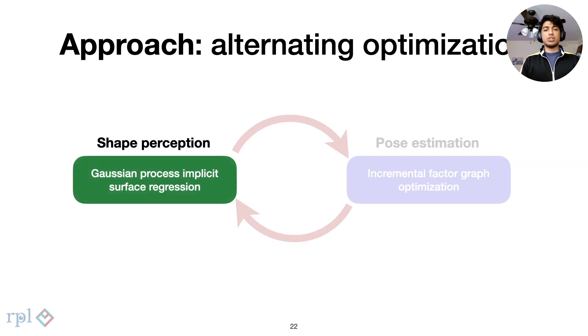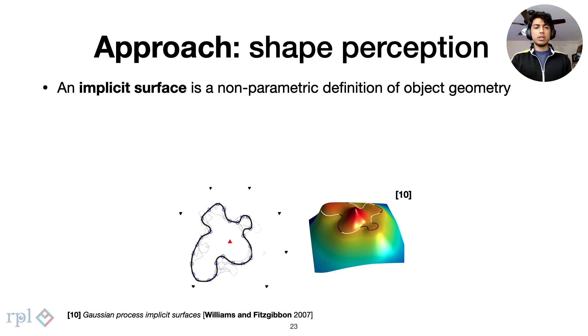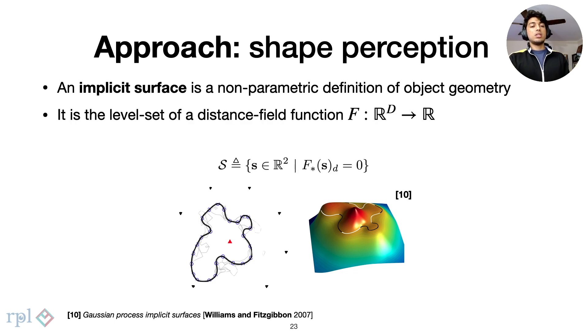Let us first consider the shape perception module. Unlike polygons, point clouds, and voxel maps, an implicit surface is a nonparametric representation of an object. When represented by a Gaussian process, it is faithful to arbitrary geometries and amenable to probabilistic updates. As seen in the figure, the surface is a zero level crossing of an object's estimated signed distance function.